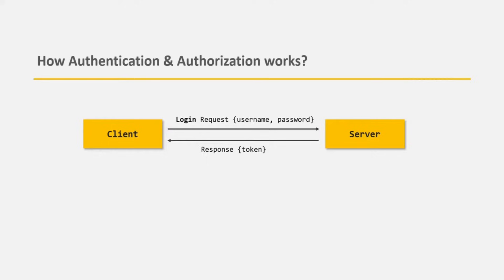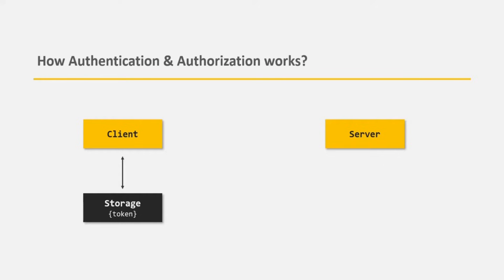Once the JSON Web Token is received by the client in the response, it is stored in some storage like the local storage of the browser. After logging in, if the client wants to access a protected resource, it will have to send that JSON Web Token with the request. This token can be sent with the request using a request header or query parameter to the server. The server is able to validate this JSON Web Token because that token was created by the server using a certain algorithm and a secret string which is only known to the server.